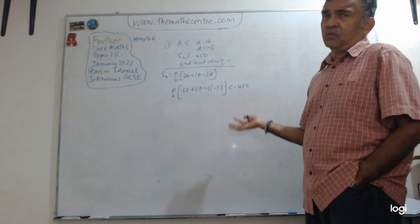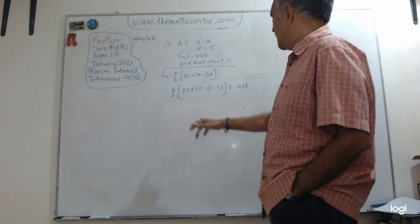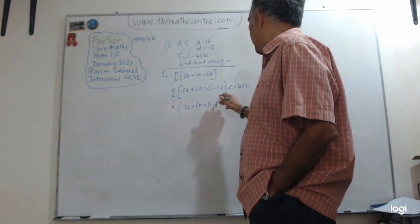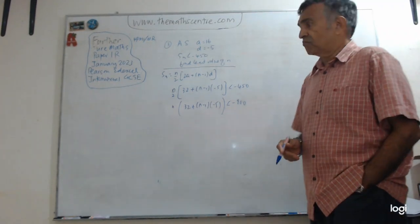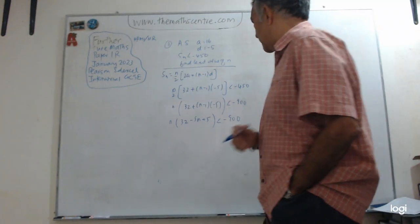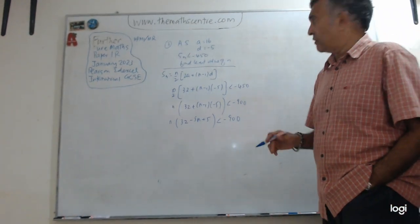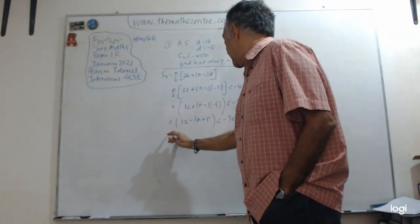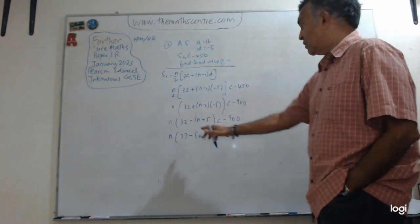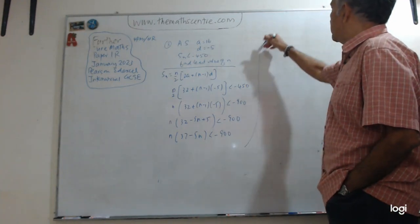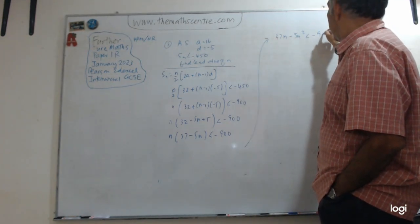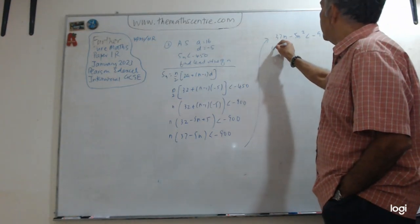Expanding the brackets, we get 32 minus 5n plus 5 inside, giving n times (37 minus 5n) over 2 less than negative 450. Multiplying both sides by 2 gives 37n minus 5n² less than negative 900. I have 5n² from expanding.